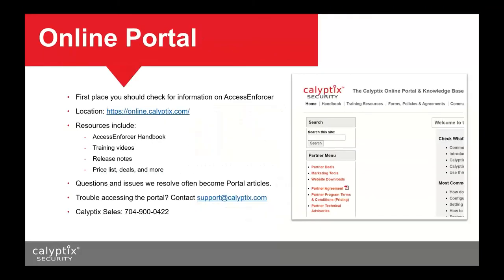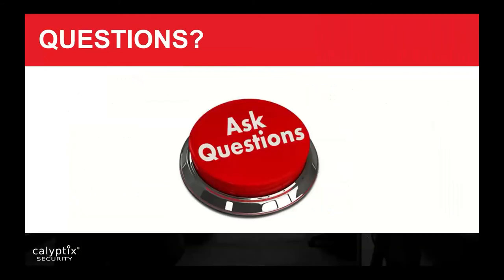The last thing we want to cover is the online portal. Most of the information from this webinar is at online.calyptics.com. If you don't have access, contact sales. If you don't have access to my.calyptics.com, contact sales as well — the phone number and email are on screen. Thank you all for coming to our DynDNS webinar. We'll now take questions.